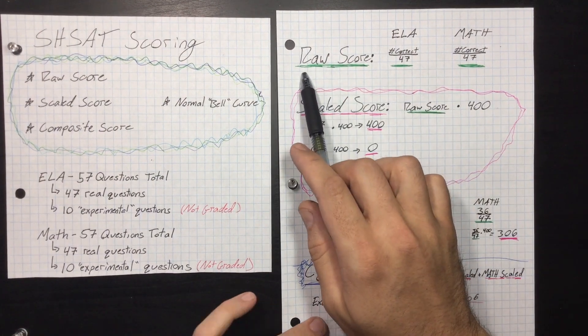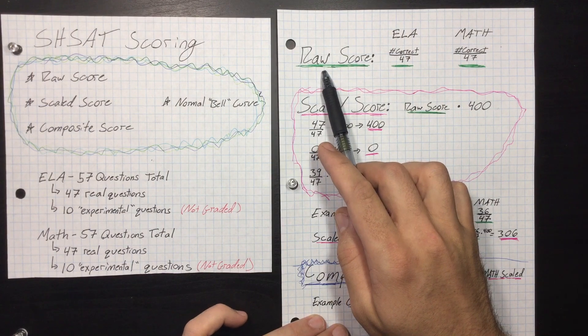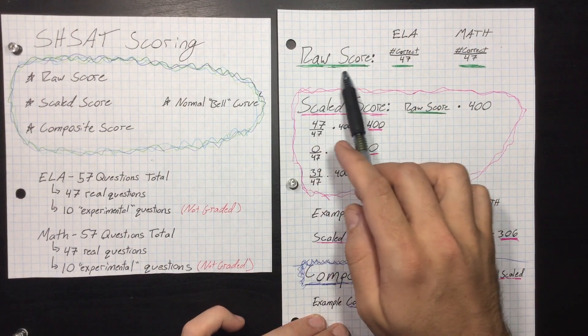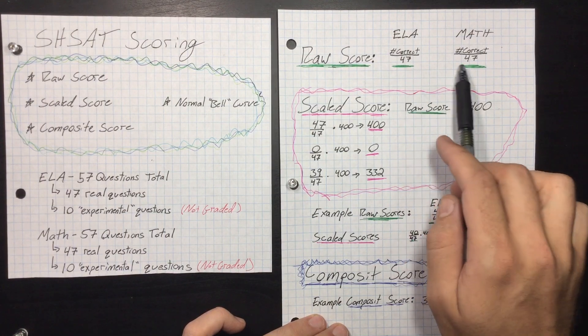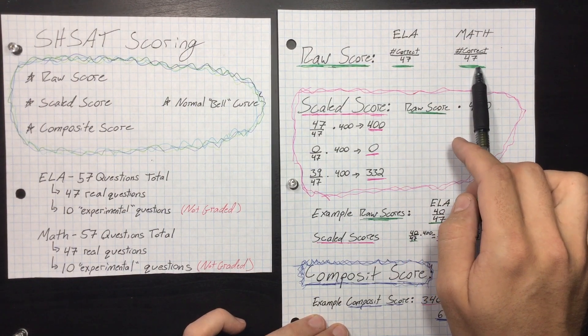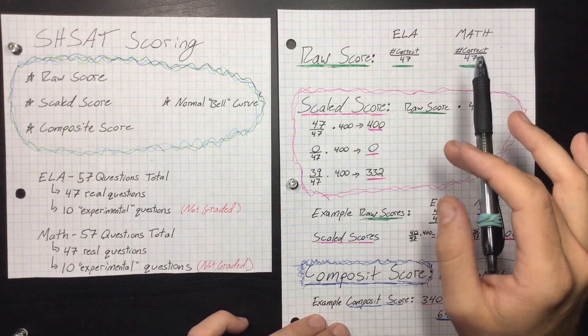So let's talk about the raw score. Basically, the raw score is what you're used to seeing in school. It's the number correct out of 47. And then for math, it's the number correct you got out of 47. This is the most straightforward way to see scores on SHSAT.